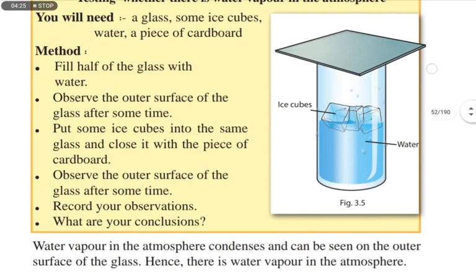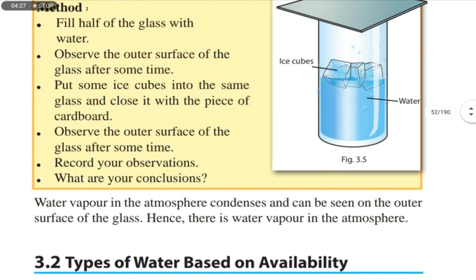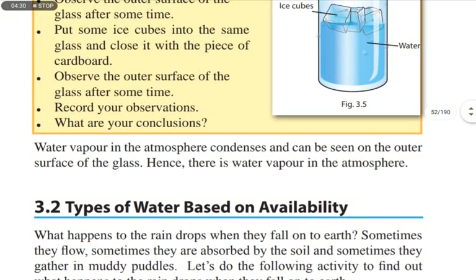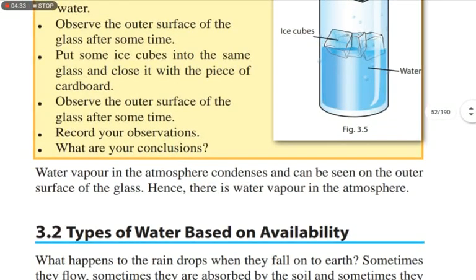Look at the picture, which clearly shows the outer surface of the glass after some time. We can observe that the water vapor in the atmosphere condenses and can be seen on the outer surface of the glass. The conclusion is: there is water vapor in the atmosphere.